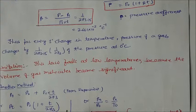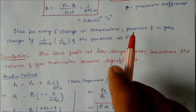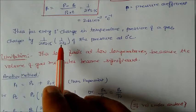From this we conclude that for every 1 degree change in temperature, pressure of a gas changes by 1/273.15, or we can say 1/273 of the pressure at zero degrees.